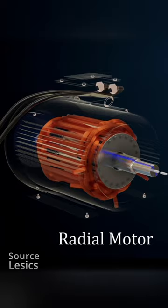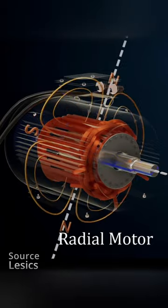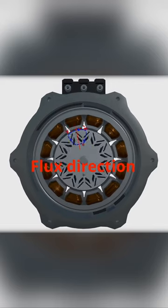In the radial flux motor, the flux is 90 degrees perpendicular to the axis of rotation.